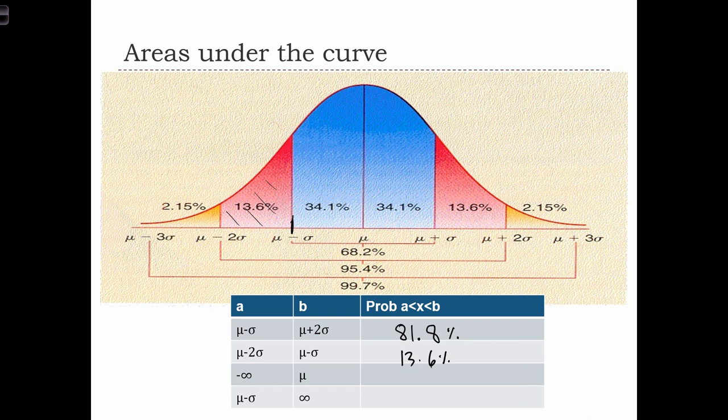Minus infinity to μ. Now, something that I didn't specify explicitly to you was that this is a symmetric curve, which means that we've got exactly 50% of the area to the right of the mean, and we've got 50% of the area to the left of the mean.